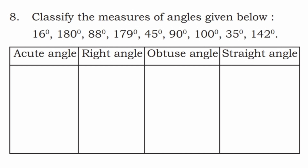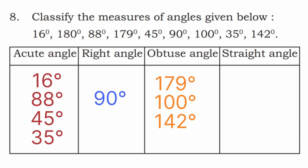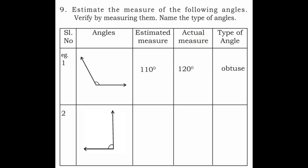Eighth question: classify the measures of angles given below into acute angle, right angle, obtuse angle, and straight angle. Acute angle means less than 90 degrees: 16°, 88°, 45°, 35°. Right angle is equal to 90°. Obtuse angle is greater than 90° and less than 180°: 179°, 100°, 142°. Straight angle equals 180°.